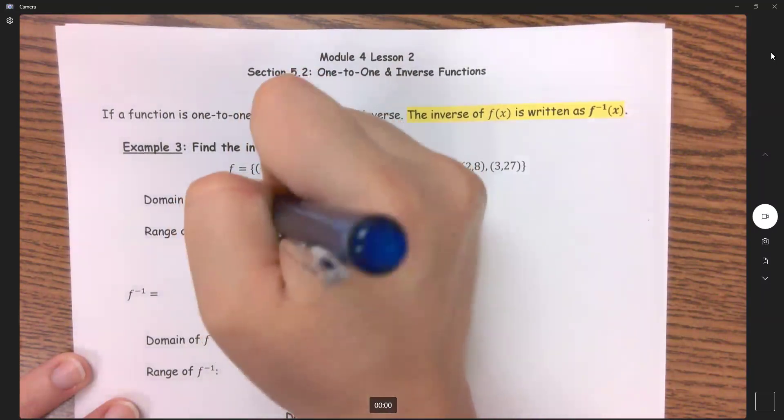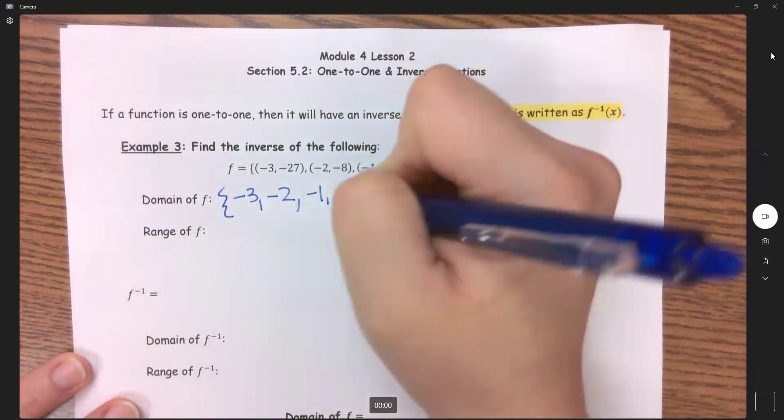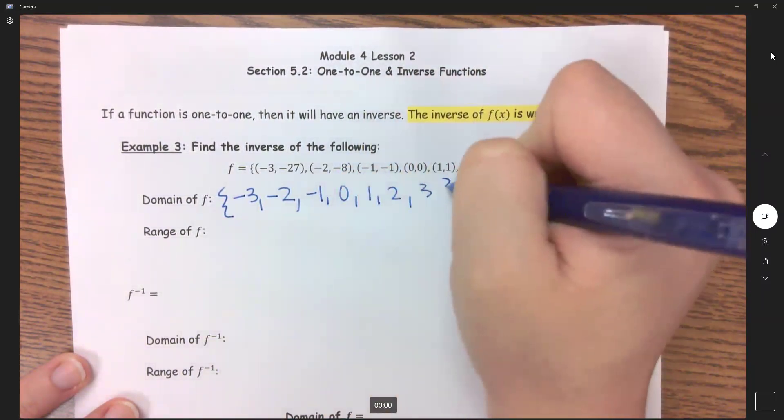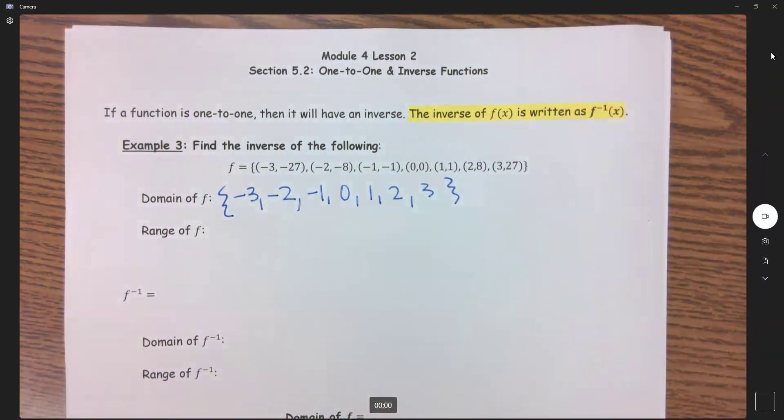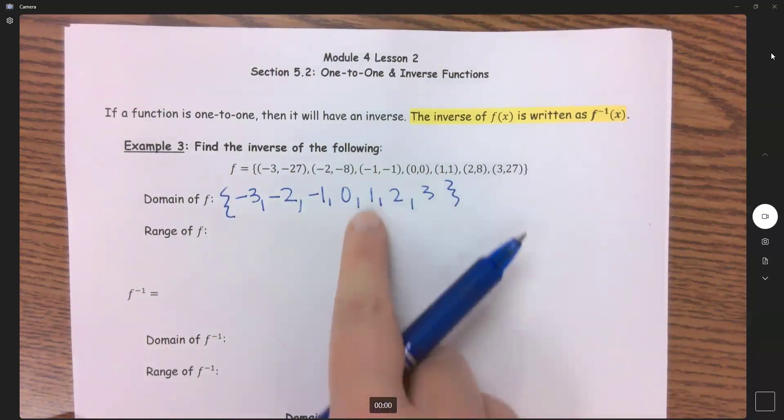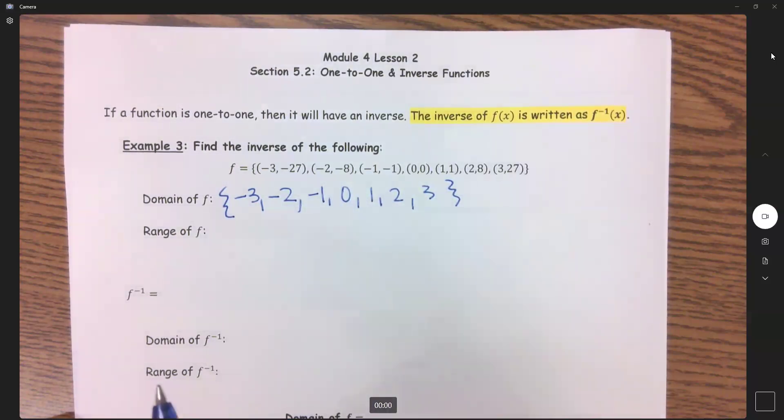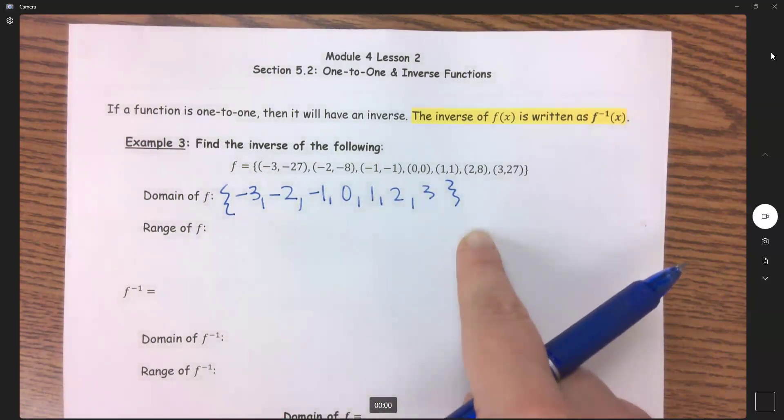So we have negative 3, negative 2, negative 1, 0, 1, 2, 3. And I want to make it clear. You cannot say negative 3 to 3 because that would include all of these little numbers in between, but we don't have those numbers in between. It is these seven numbers and these seven numbers only.